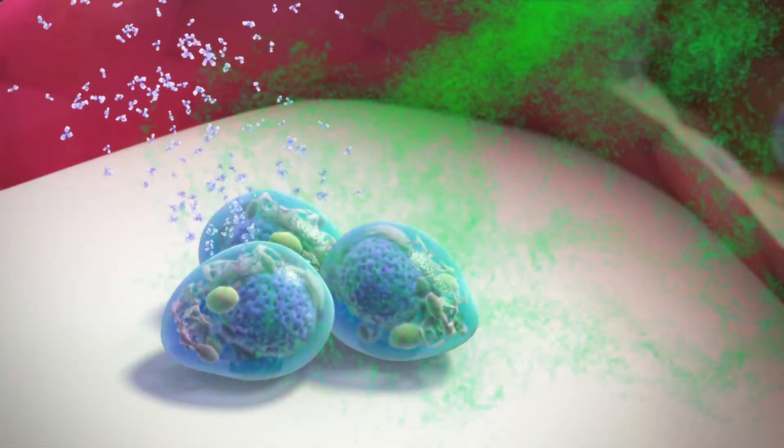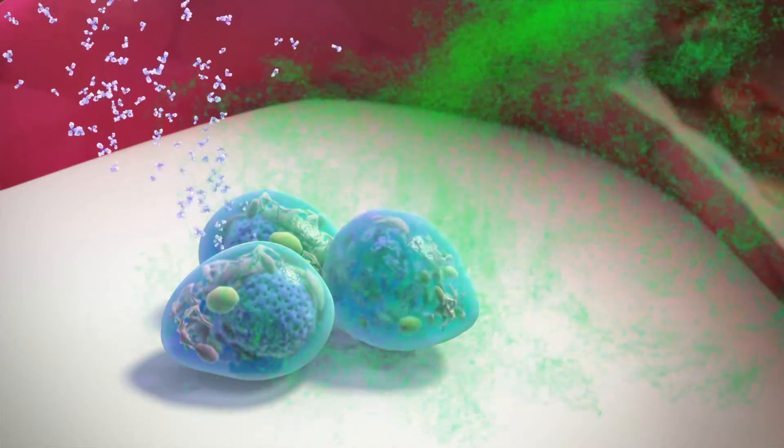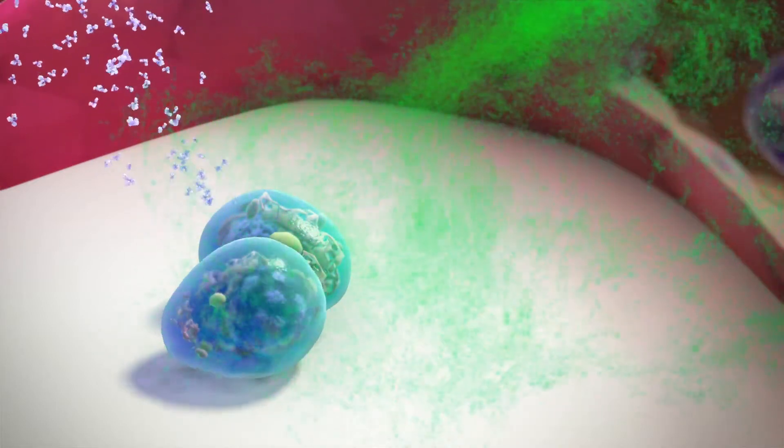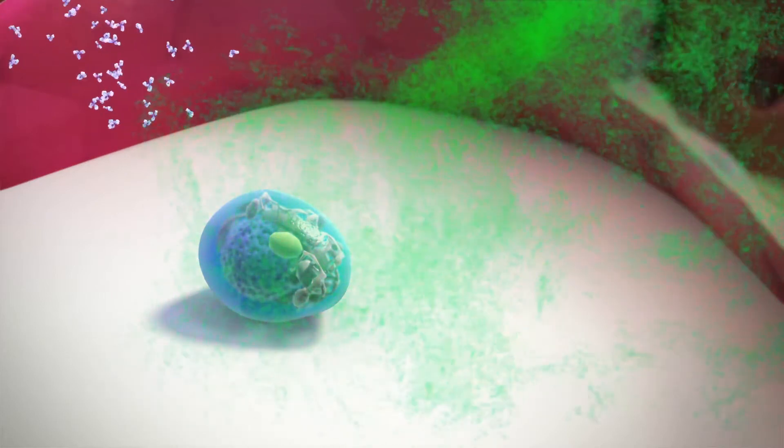Treatment is aimed at stopping the build-up of amyloid and is therefore directed at the plasma cells to reduce or stop the production of abnormal free light chains.